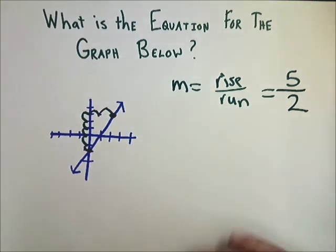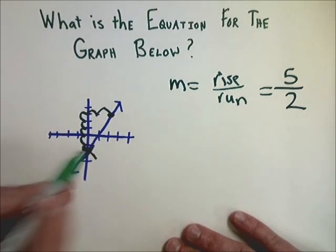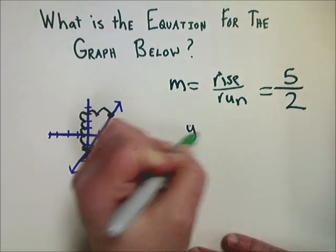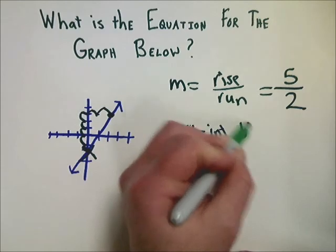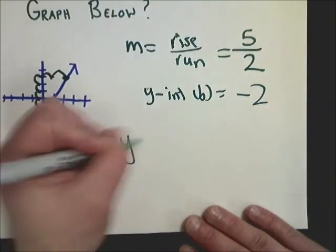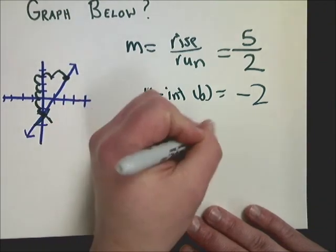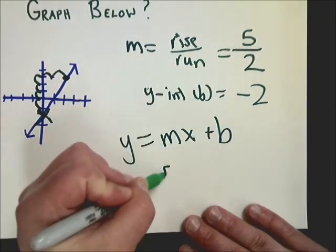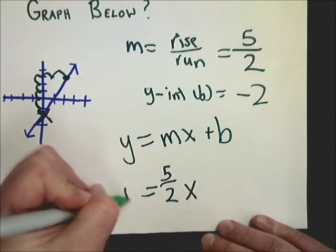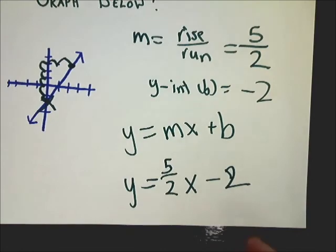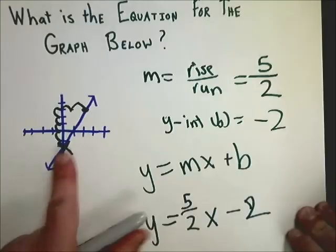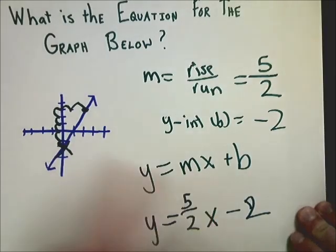Now I also need to know what the intercept is. Well, it crosses right here at negative 2. So my y-intercept or my b value, if I want to call it that, is negative 2. So in order to write the formula, all I do is go back into my original form, plug in 5 over 2 for the m, keep the y and the x, and then I put minus 2 for my intercept. Very simple. That's all you have to do to take a graph, make an equation. Find the slope, intercept, put them together, ready to go.